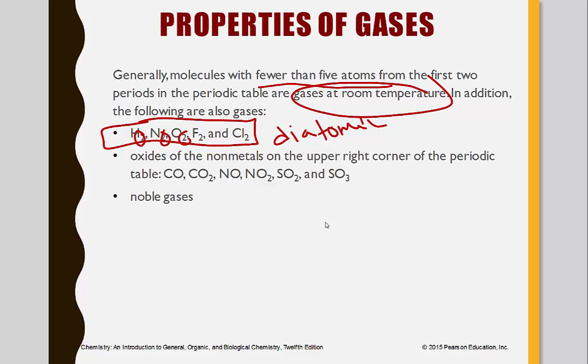Also, oxides of nonmetals on the upper right hand corner of the periodic table are going to be in gas form. Carbon monoxide, carbon dioxide, sulfur trioxide, and then of course noble gases.